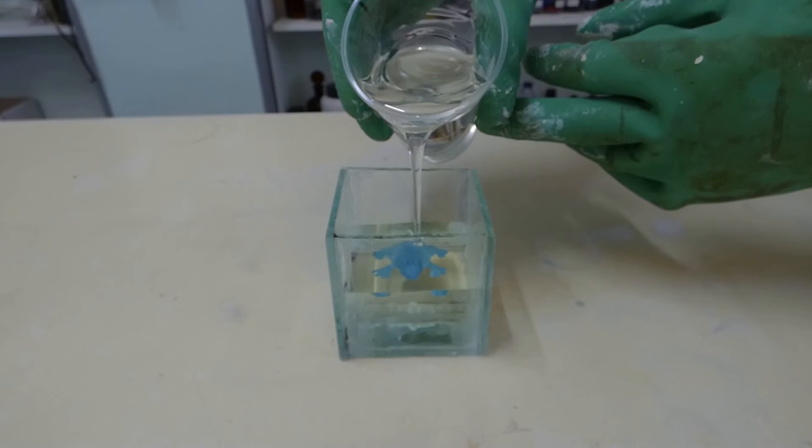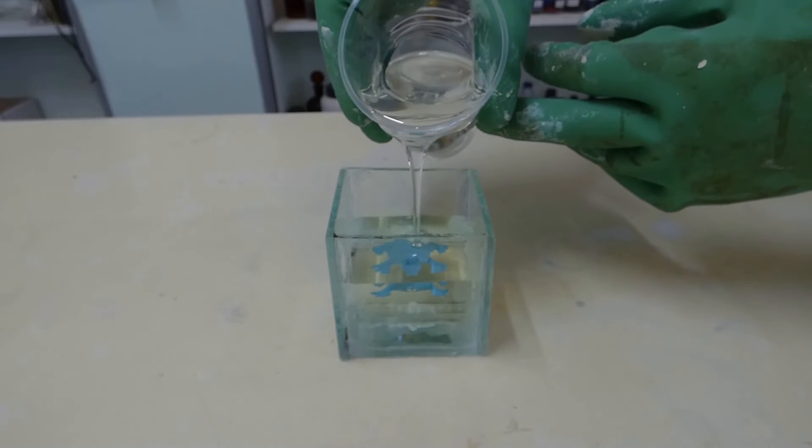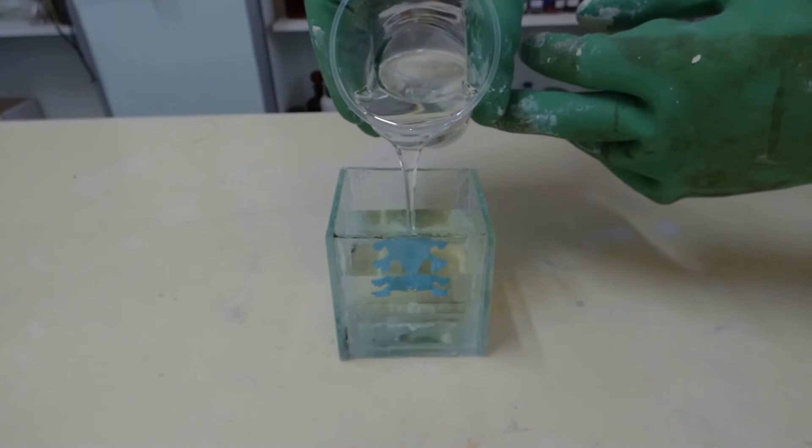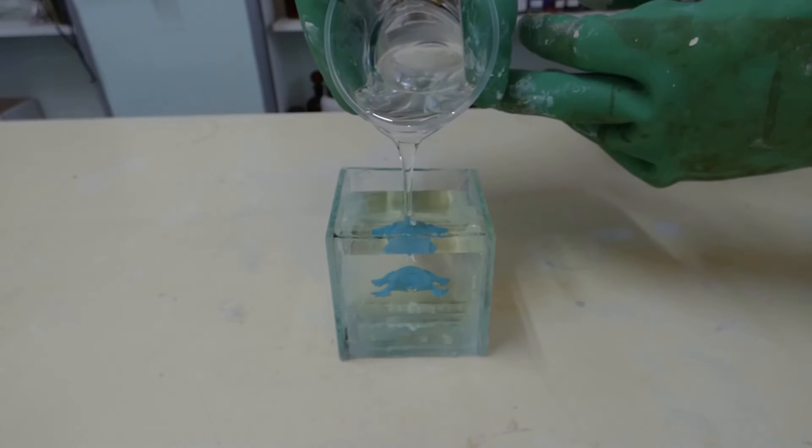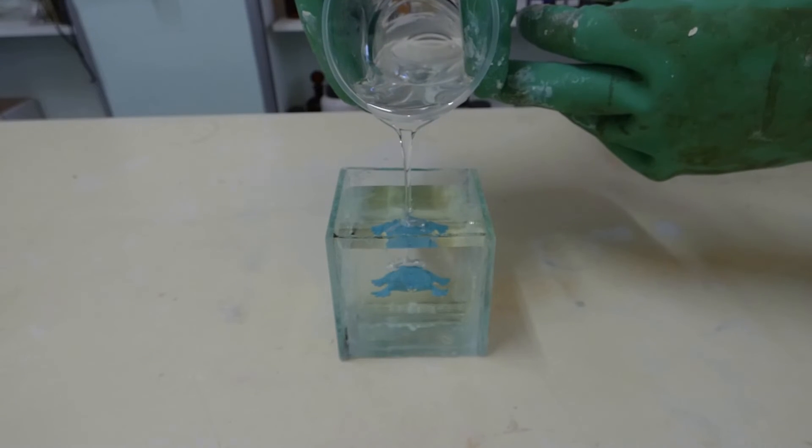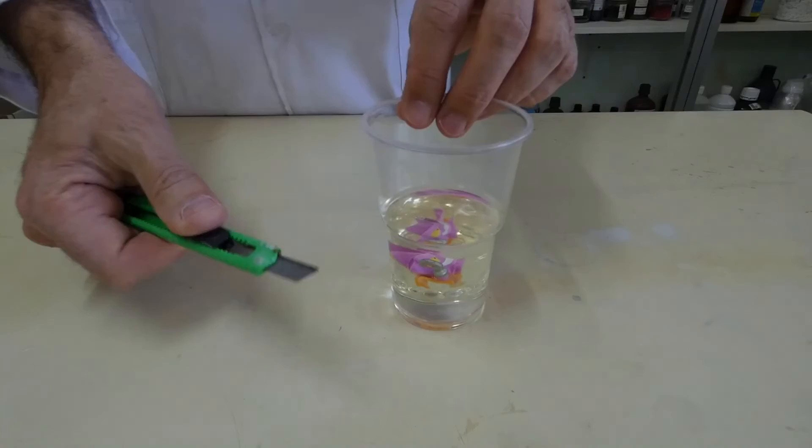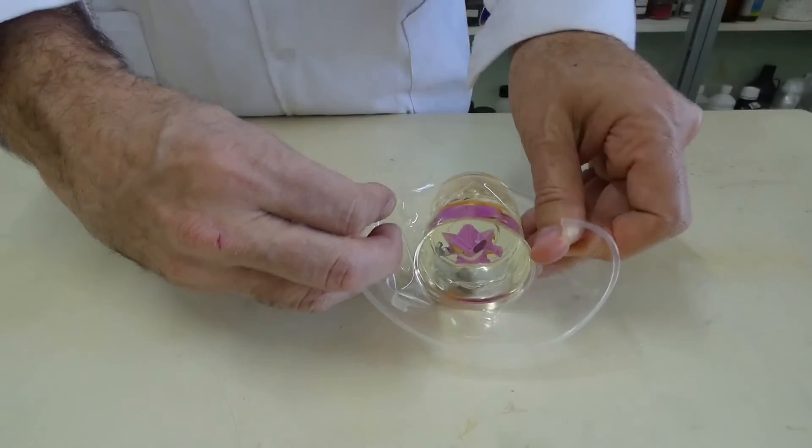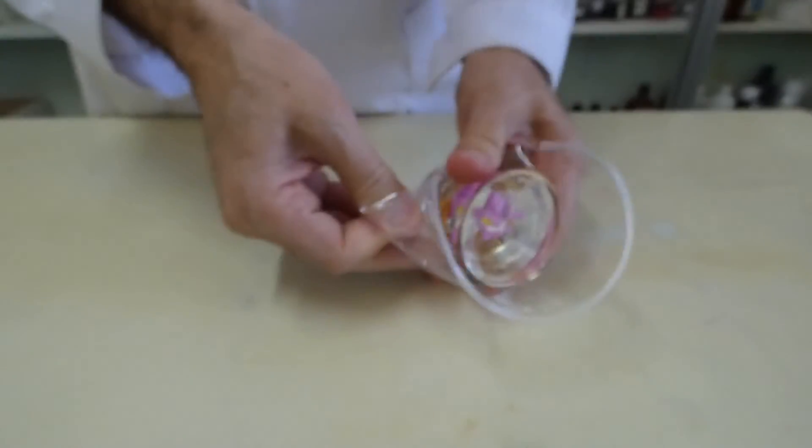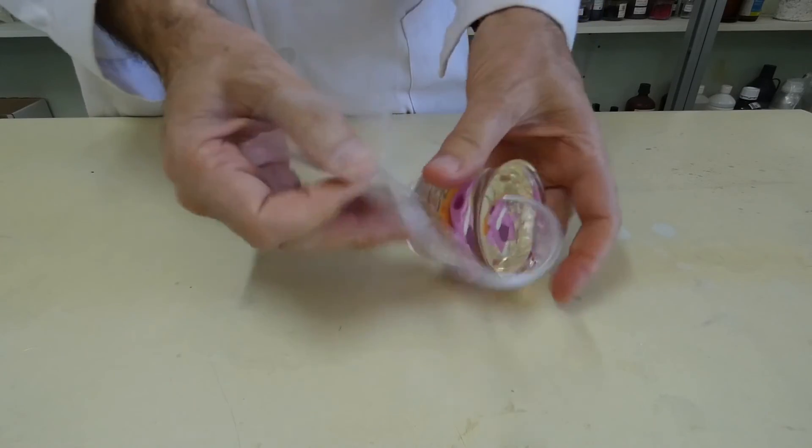Wait another two hours for the mixture to harden. If the mold is plastic, it can be peeled off. If it's glass, it can't. And this is the result.